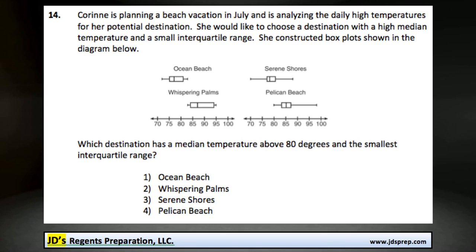This is problem number 14 from the January 2015 Algebra Readiness Exam. Corinne is planning a beach vacation in July and is analyzing the daily temperatures for a potential destination. She wants to choose a destination with a high median temperature and a small interquartile range.